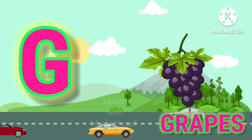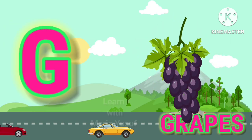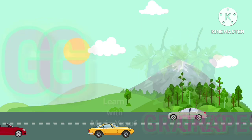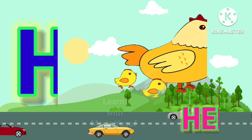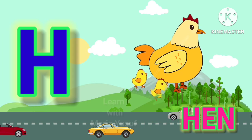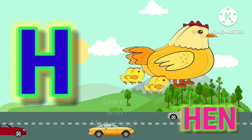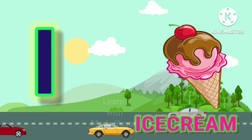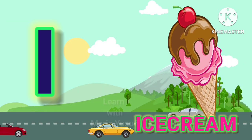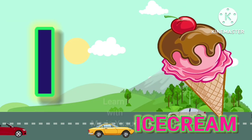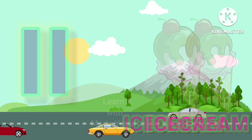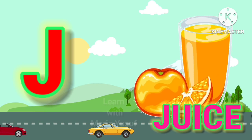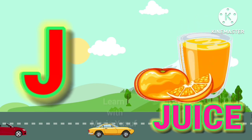G for Grapes, H for Hen, I for Ice Cream, J for Juice.